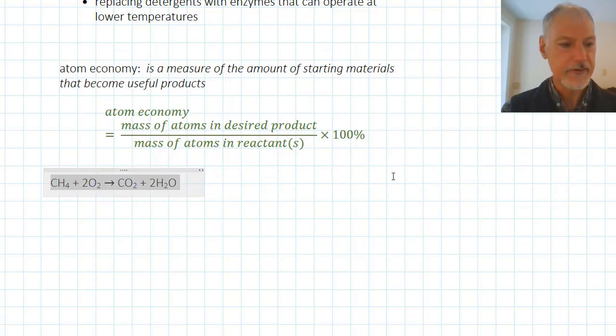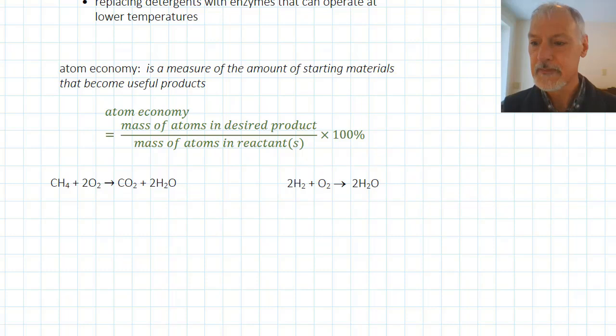So I'm going to look at two processes here to produce water. Let's examine the atom economy of these two particular methods. In the first, I'm going to determine the relative mass of the species involved.